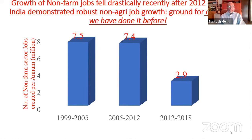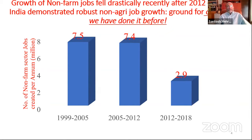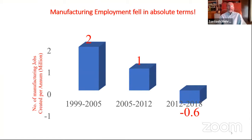In the first half of the last decade, we were generating seven and a half million new non-agri jobs per year during the dream run when we were growing at eight percent per annum — poverty was declining and workers were moving out of agriculture. But after 2012, non-agri jobs total — meaning construction, manufacturing, and services taken together — fell to just 2.9 million per annum. Manufacturing employment was growing, though not very rapidly, until 2012. But what happened after 2012 is catastrophic: for the first time in India's development history there has been an absolute decline in manufacturing employment.